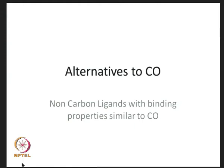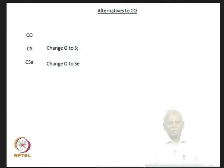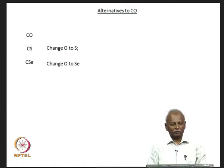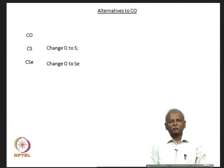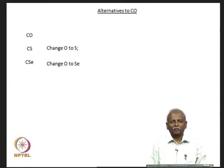In changing from carbon monoxide to other ligands, we notice that we can very simply replace the oxygen by an element from the same group — that is sulphur or selenium. We do get some very good ligands: carbon monosulphide and carbon monoselenide. These are excellent ligands, but the preparation of molecules containing these ligands turns out to be quite difficult. Because of this, and also because of the toxicity of carbon monosulphide and carbon monoselenide, people have tried to move away from these ligands and look for alternatives.